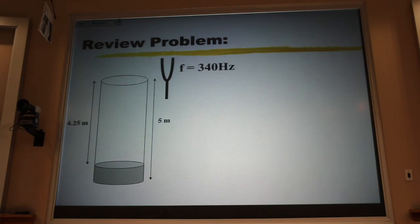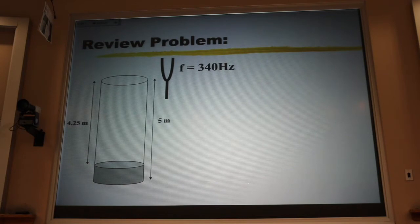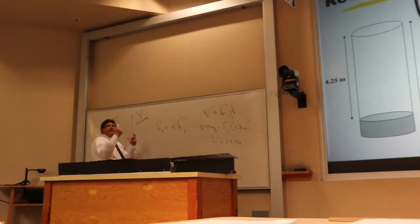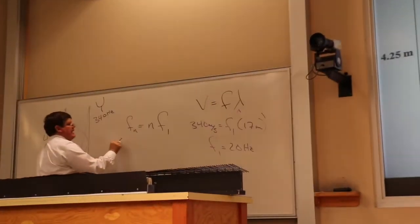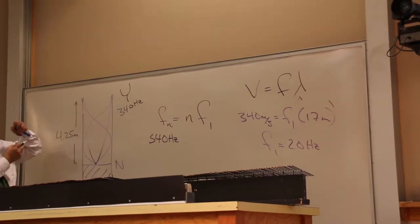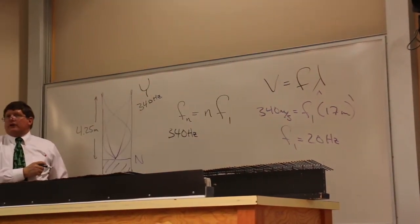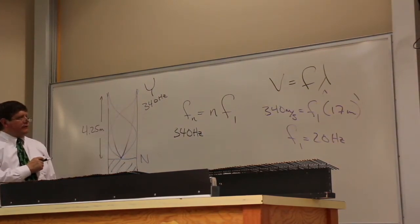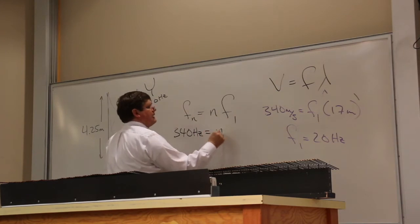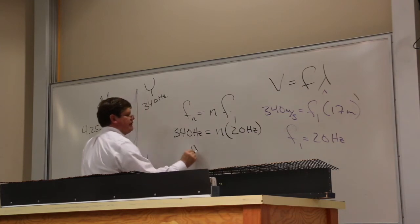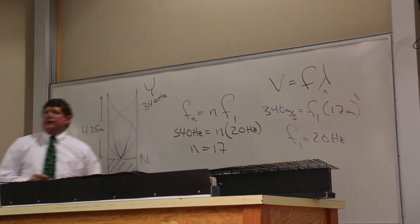Pretty easy. The nth harmonic is always n times the fundamental, or the first harmonic. In this case, we're exciting the nth harmonic at 340 hertz. This air column has to resonate or sync at the same frequency at which it's being tickled or perturbed. That's going to be 340 hertz. That's going to be equal to n times the fundamental of 20 hertz, and that gives me an n value of 17. It's the 17th harmonic.